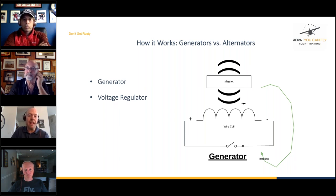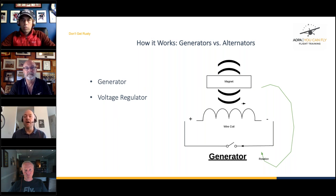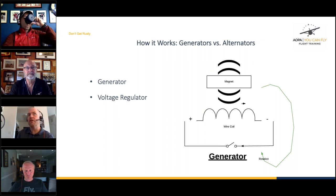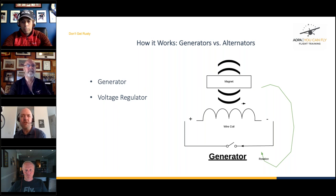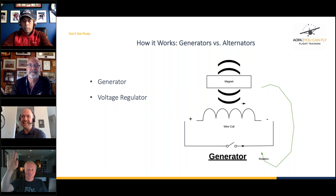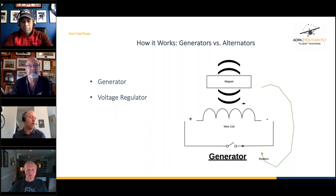Looking at the screen, we have a wire coil with our electrical system and a master switch. In the generator we have a magnet — if you take the magnet and spin it around the coil of wire, the magnetic field moves electrons, and that's what generates electricity. The faster you move that magnet, the more electricity you create. The problem is that as you change RPM — because generators are directly connected to the engine — that changes how much is coming out. So we use a voltage regulator to even it out and keep it within limits.